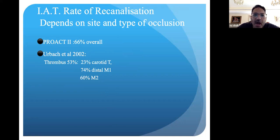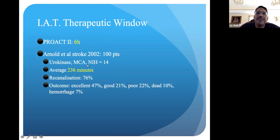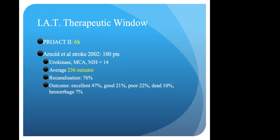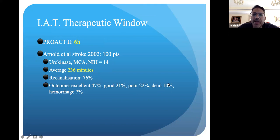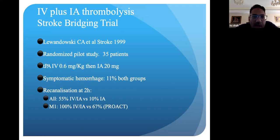Different mechanisms and areas were tried, and while recanalization was noted, the problem was still mortality. The therapeutic window was also sometimes an issue depending on when patients were treated. Urokinase was tried — again, good recanalization but outcomes were not always good. Some patients would die or have hemorrhage: 10% dead, 7% with hemorrhage, and 22% with poor outcomes. So even intra-arterial therapy did not seem to be working the best.